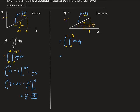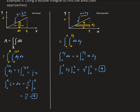Let's evaluate. First, the integral of dx from zero to 2y gives us x evaluated from zero to 2y, which equals 2y. Then we integrate 2y with respect to y from zero to two. The integral of 2y is y squared, evaluated from zero to two, which gives us four. So we get the same solution — four square units.